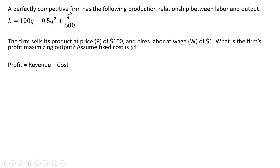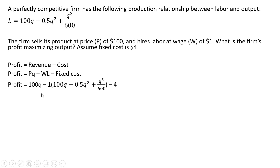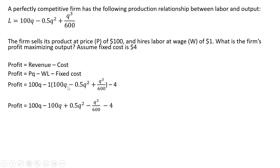We're going to set up the profit function, so profit is revenue minus cost, where revenue is the price per unit — in this case $100 — times the quantity of units. We subtract out the variable cost, which is the wage times units of labor, and then subtract out the $4 of fixed cost. The price is $100, the wage is $1, and we plug in the expression for L: 100Q minus 0.5Q squared, in parentheses. Then we subtract the fixed cost of $4 and distribute the minus 1 through the parentheses to get our simplified profit function.